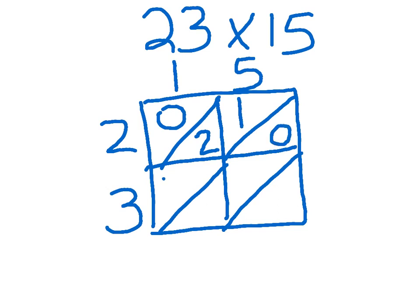3 times 1 is 3: 0 tens, 3 ones. And 3 times 5 is 15: 1 ten, 5 ones.